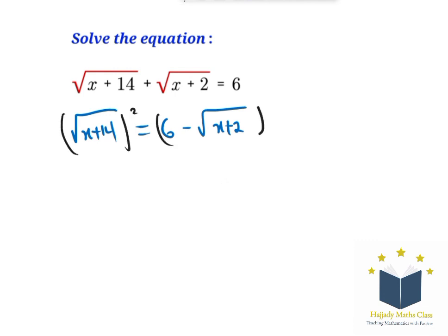On the left-hand side, I'm going to have x plus 14. On the right-hand side, just like having (a - b)² which is the same as a² - 2ab + b², the same thing is going to be applied there.